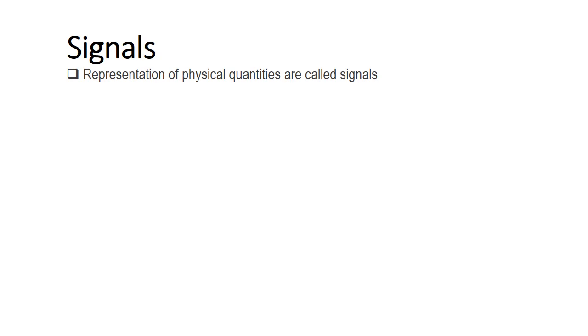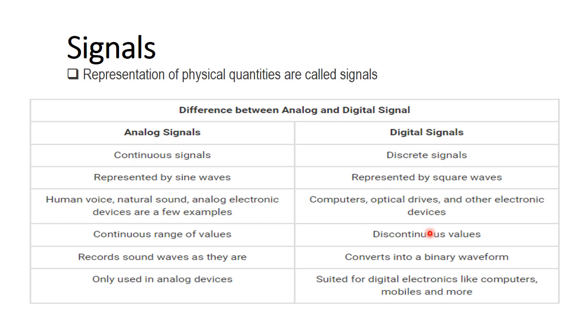Representation of physical quantities are called signals. There are two types of signals in our daily life: analog signals, which are continuous and can be represented by sine waves - for example, our voice, our different electronic devices. The range is continuous. Record sound waves as they are, only used in analog devices. Digital signals are discrete signals, unique signals. They can be represented by square waves. Computers, optical devices, and electronic devices - they are discrete, converted into binary waveform, and they are suited for computers, mobiles, means for information technology.